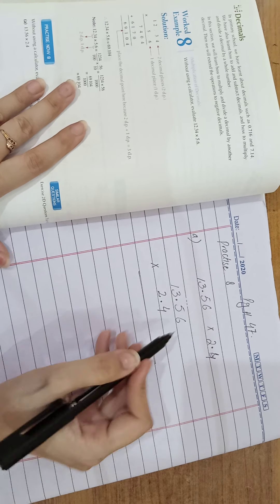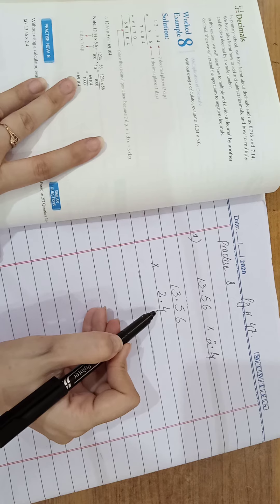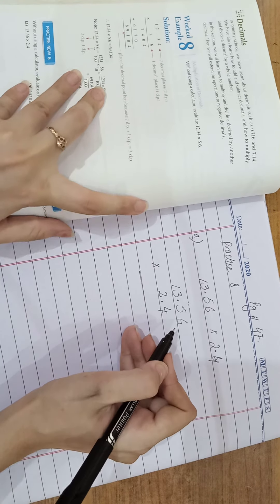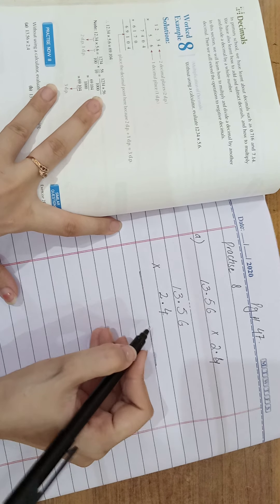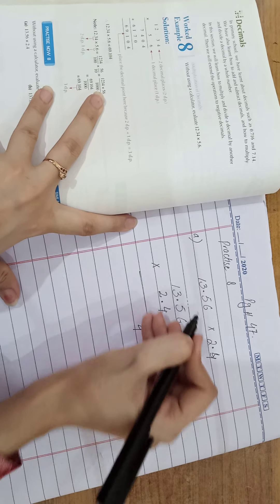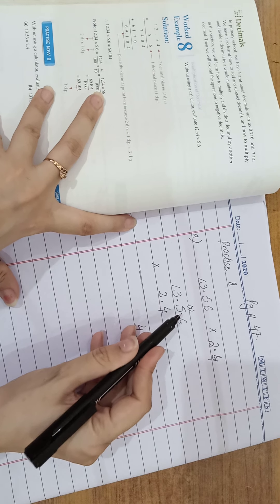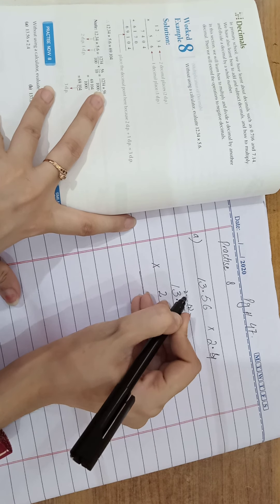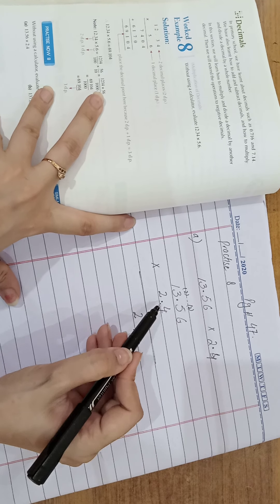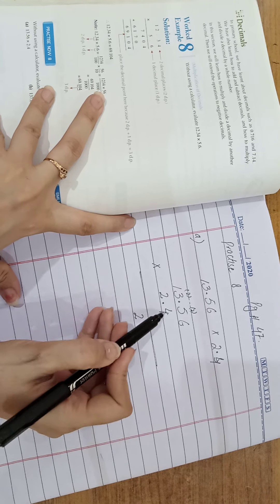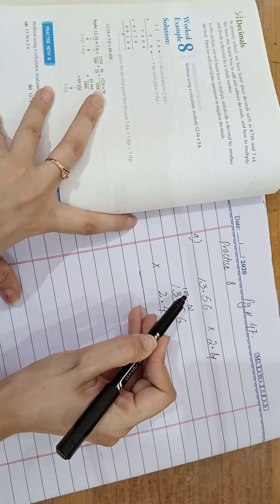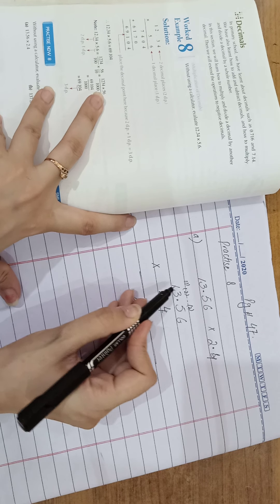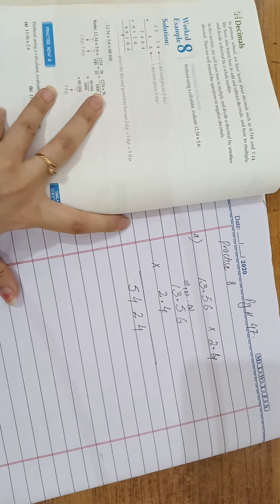Okay, multiply. First of all, we are going to multiply 4 with all values one by one. 4 times 6 is 24. 4 and 2 is carry. 4 times 5 is 20, 20 plus 2, 22. 2 carry. For some moments, just forget the point. 4 times 3 is 12 plus 2, 14. 1 carry. 4 ones are 4 and 1, 5. Clear?